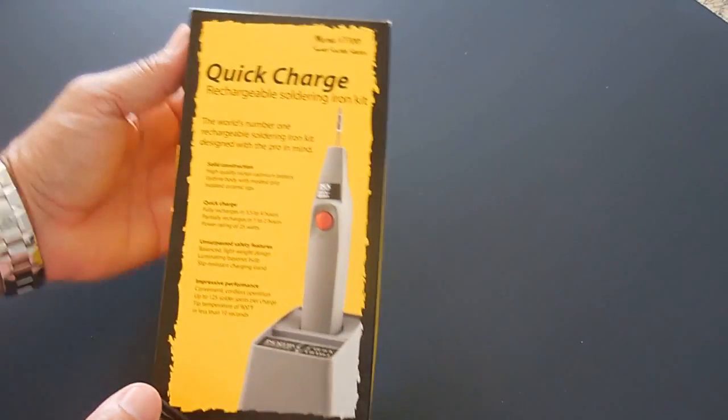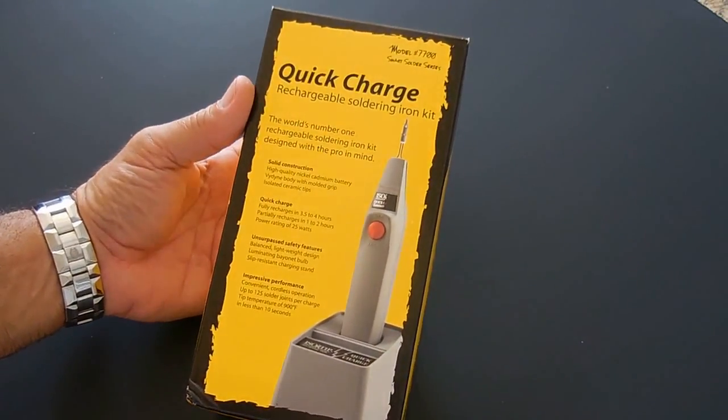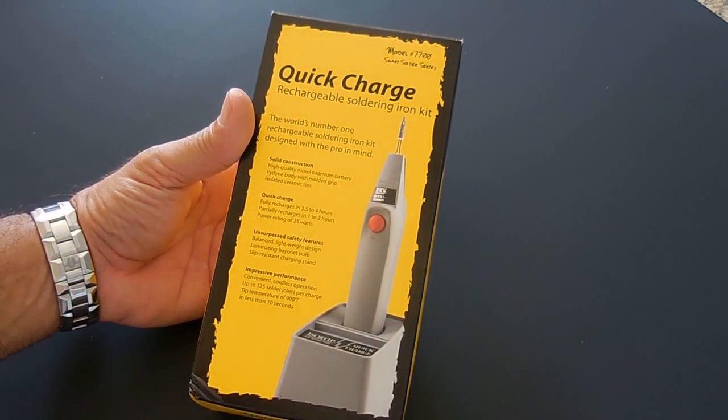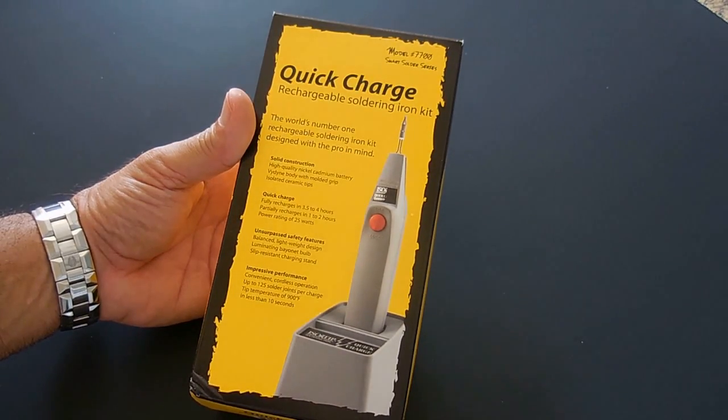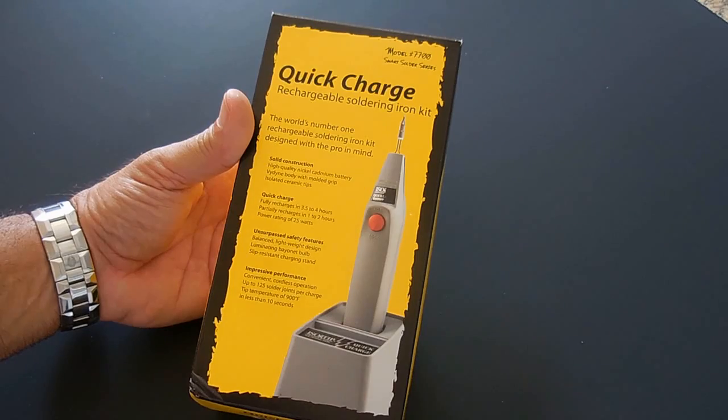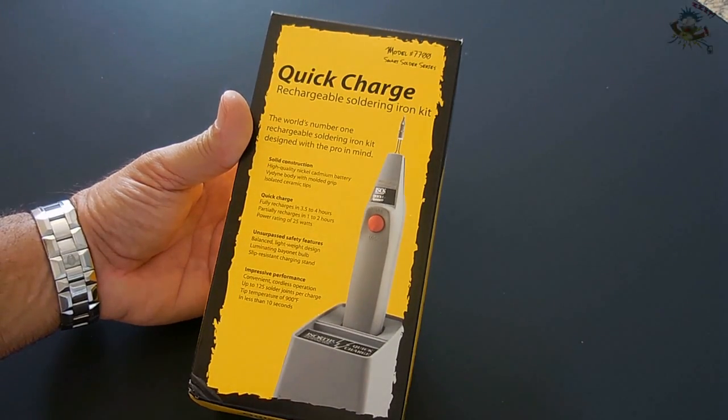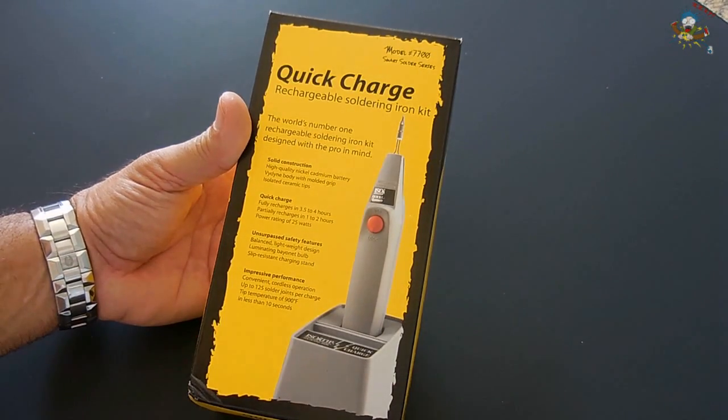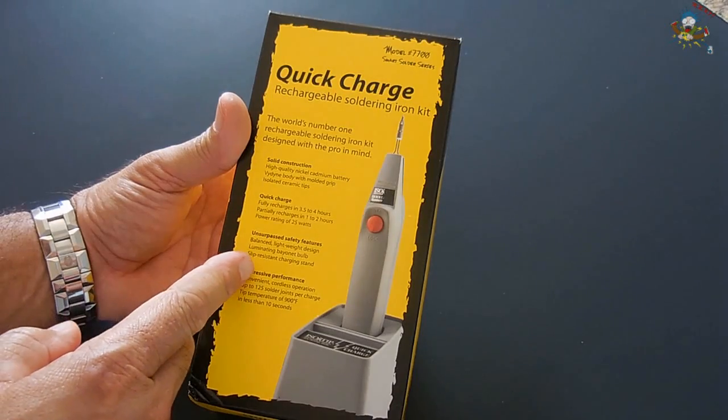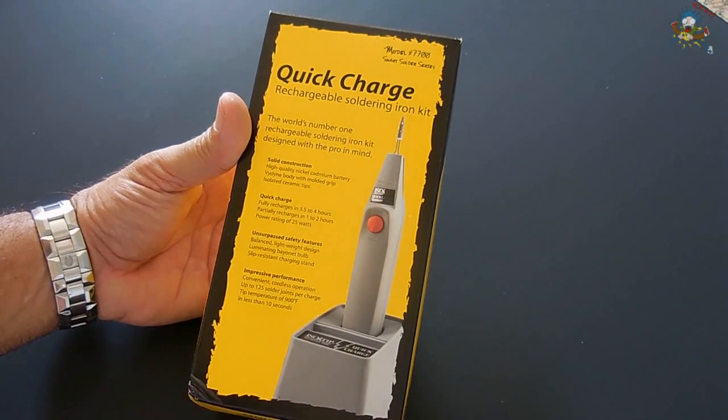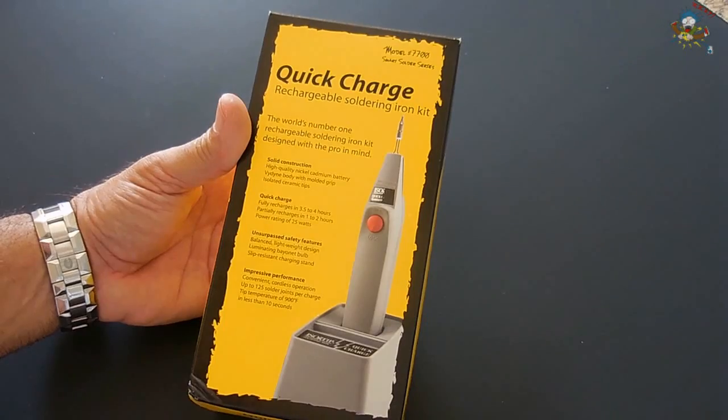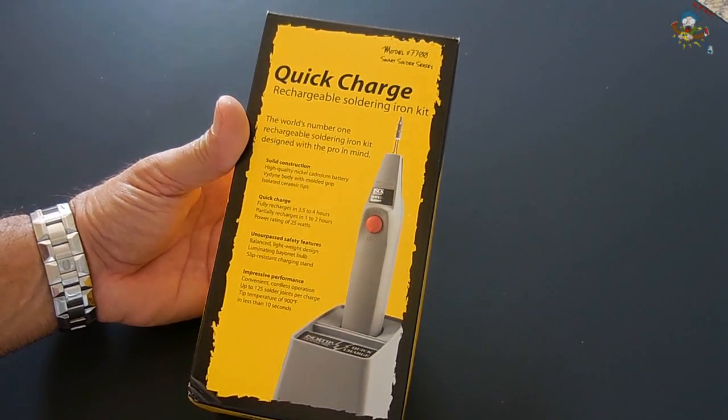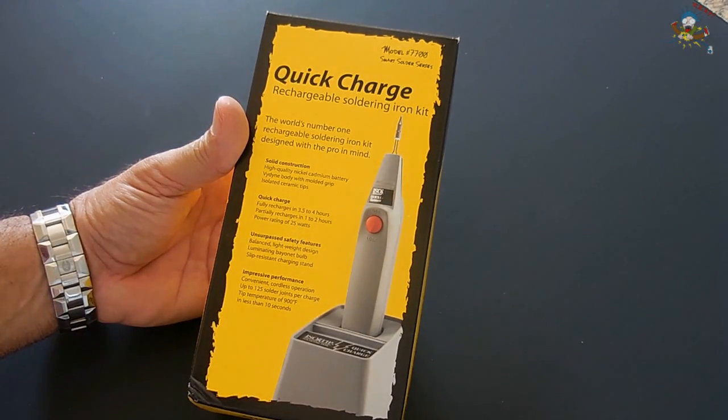Alright, let's take a look at the soldering iron. World's number one rechargeable soldering iron kit. According to this, cordless operation up to 125 solder joints per charge, tip temperature of 900 degrees Fahrenheit in less than 10 seconds. It's equivalent to a 25-watt soldering iron, balanced weight and design that we will check out in a minute. Now, this one has an illuminating bayonet bulb. The only thing that you're going to notice with my soldering iron, which is going to differ from the one you see here. As usual, I like to modify things. I replaced the incandescent lamp with an LED, an ultra bright white LED.